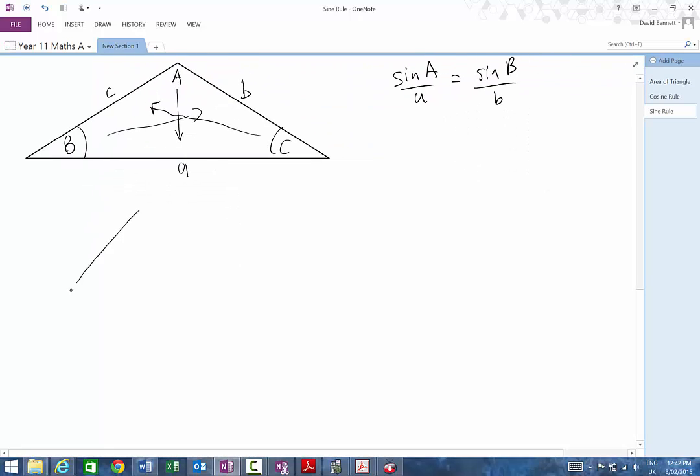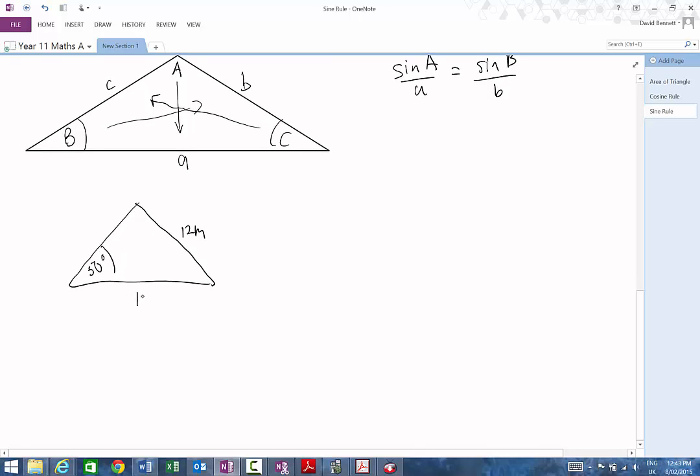So if I'm going to give you a triangle, and let's say I've got this angle over here is 50 degrees, and that side over there is 12 meters, and this side over here is 30 degrees. Let's say this over here is 10 meters, and I want to find this angle here, and we'll call that angle theta.